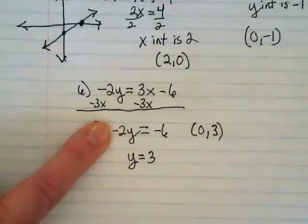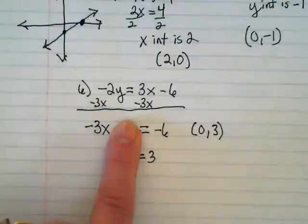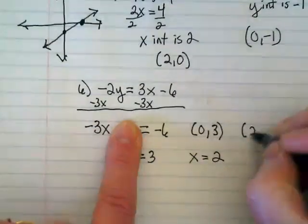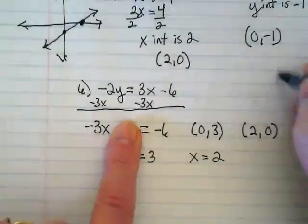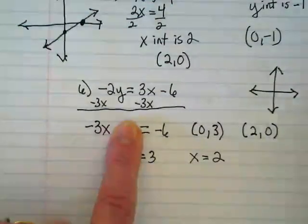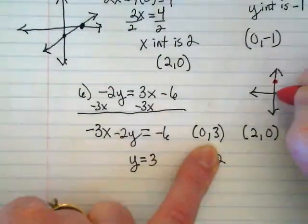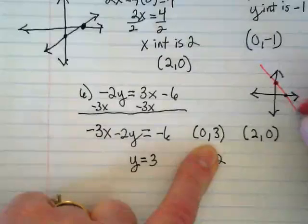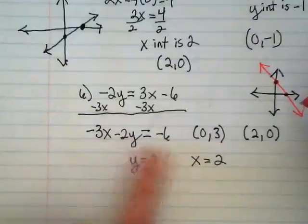If I cover up the y term, what am I going to find? You're going to find that x is positive 2, which means I've got 2 comma 0. Can I graph that? 0, 3 would be up about here. And 2 comma 0 would be about here. Here's my line. It's negative. Which kind of makes sense if you go back to the original equation. Everything in that was negative, wasn't it?